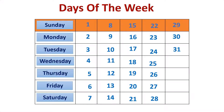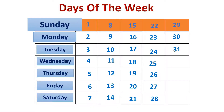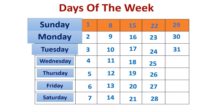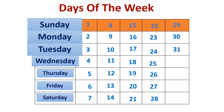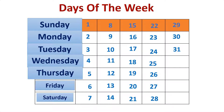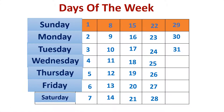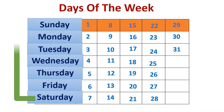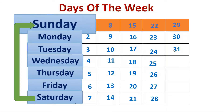Days of the week: Sunday, Monday, Tuesday, Wednesday, Thursday, Friday, Saturday — and Sunday comes again. These are the seven days of a week, from Sunday to Saturday.